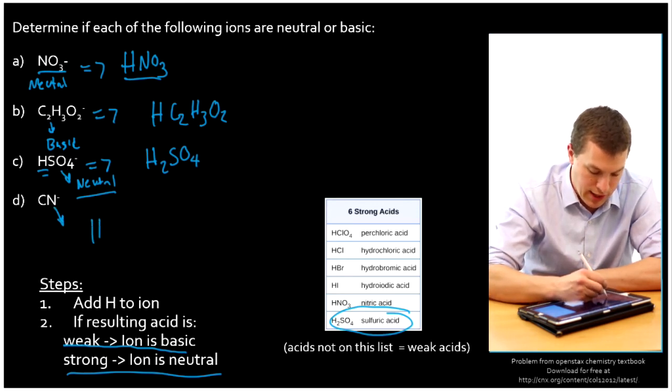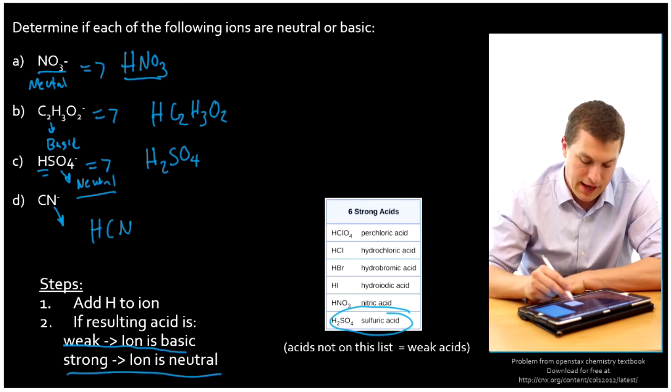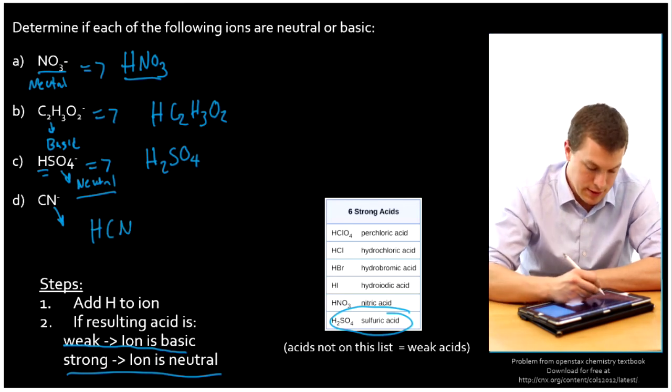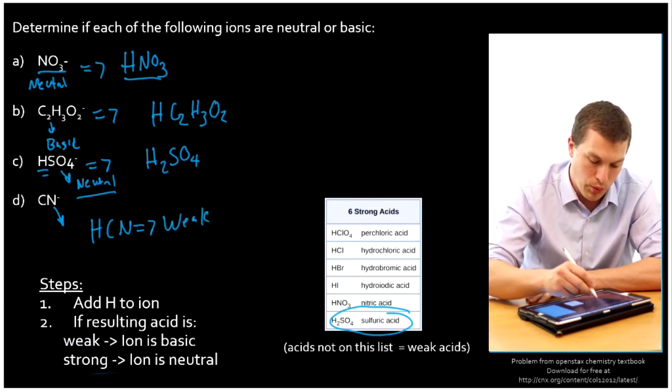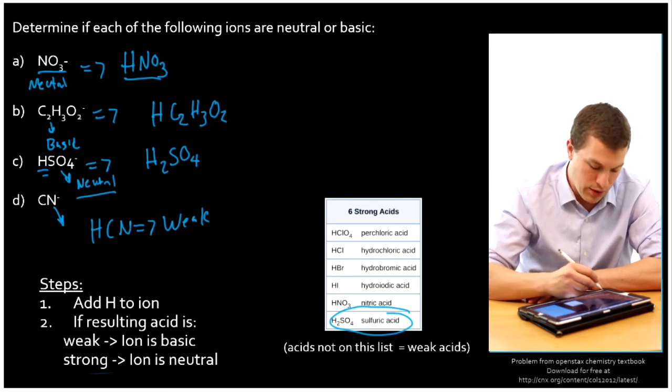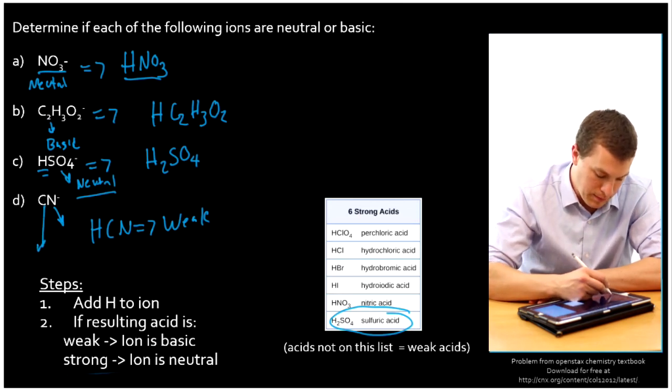And then we have CN. And if we add a proton, we'll get HCN. This guy's not on our strong acid list. So that means that this guy is weak. And since it is, in fact, a weak acid, we know that the ion itself would be basic.